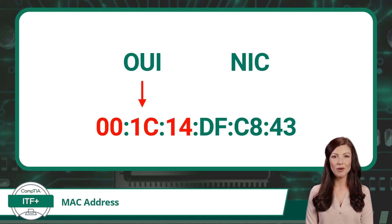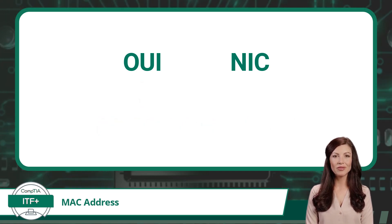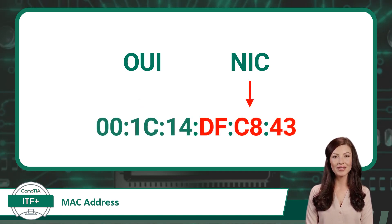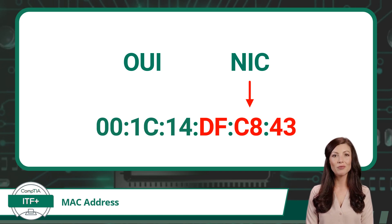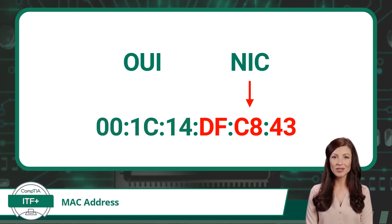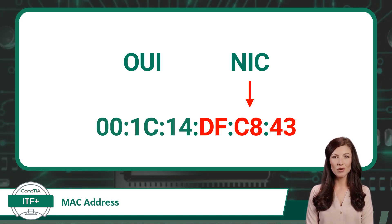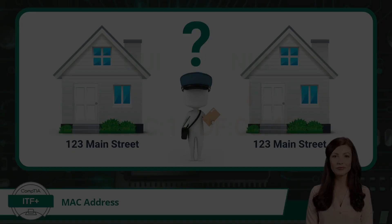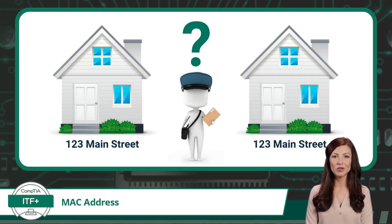The second part of a MAC address is the NIC, or Network Interface Controller. It follows the OUI and consists of the remaining six hexadecimal digits of the MAC address. The NIC part provides a unique identifier for the device itself within the manufacturer's range of MAC addresses. This portion of the MAC address distinguishes individual devices produced by the same manufacturer.